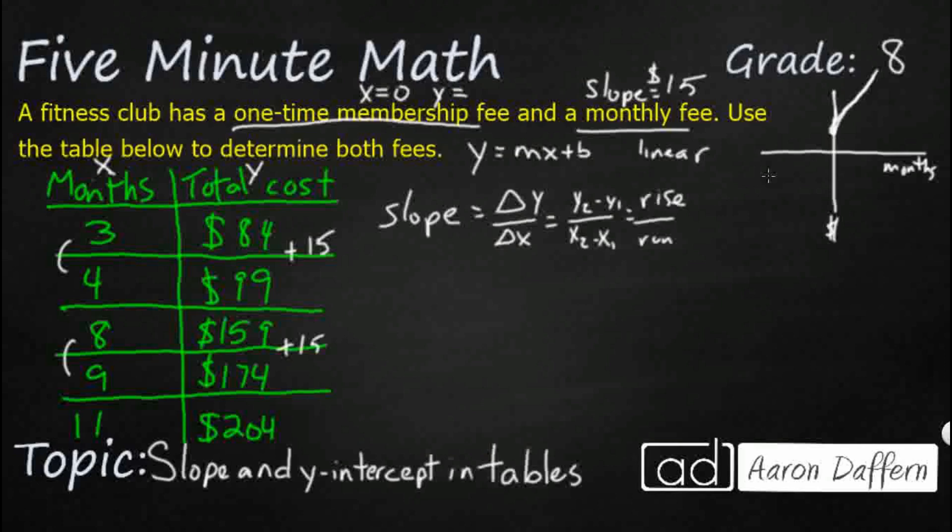So let's take some x's and y's that aren't right next to each other to see if this works. So let's do 204 and 99. So let's say 204 minus 99, and then those coordinating x points are 11 and 4. So 11 minus 4.